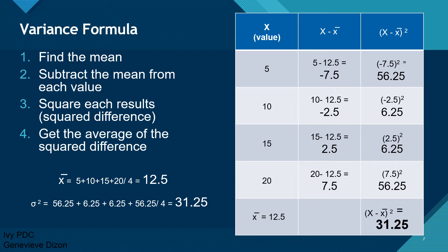So the steps are: first compute the mean, then subtract the mean from each value, then square the differences, then get the average of the squared differences — that is the variance formula. Our variance here is 31.25, meaning the values are 31.25 away from the mean. If the variance is zero, the data is identical. The higher the variance, the more the values are spread out; the lesser the variance, the lesser the values are spread out. The general rule applies: the higher the value, the higher the dispersion.